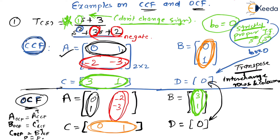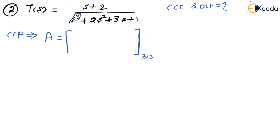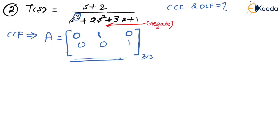Now let us think of another example — a second transfer function where we need to find CCF and OCF. The order of the system is 3, so the A matrix will be 3×3. For CCF, the first rows are [0, 1, 0] and [0, 0, 1]. The last row is found by reversing the denominator and negating: +1 becomes −1, +3 becomes −3, +2 becomes −2. So the last row is [−1, −3, −2].